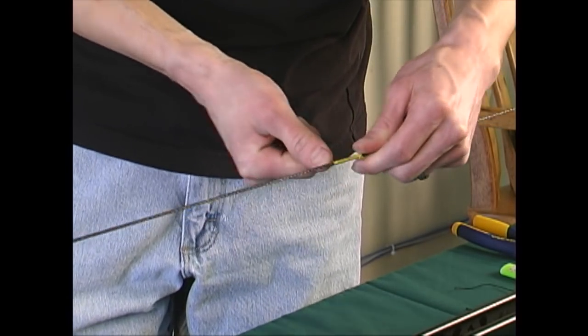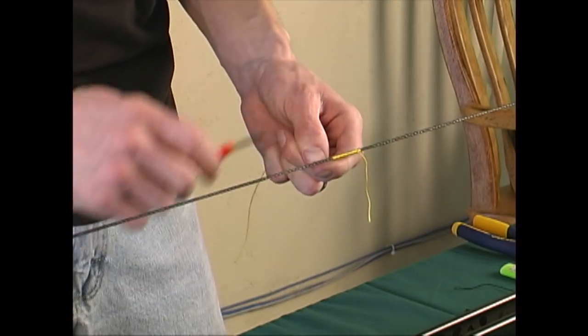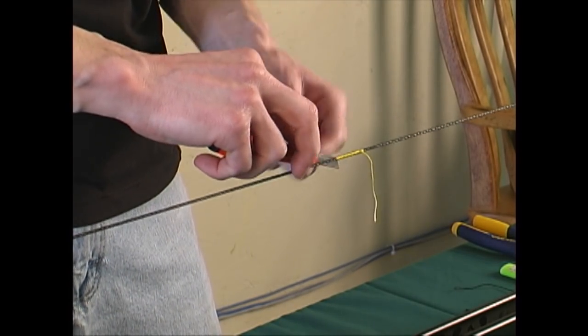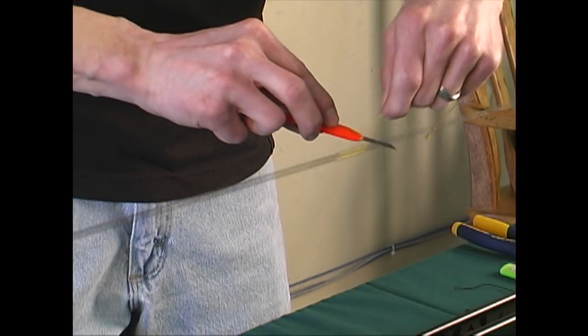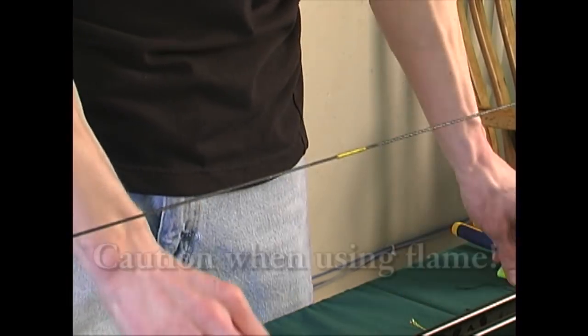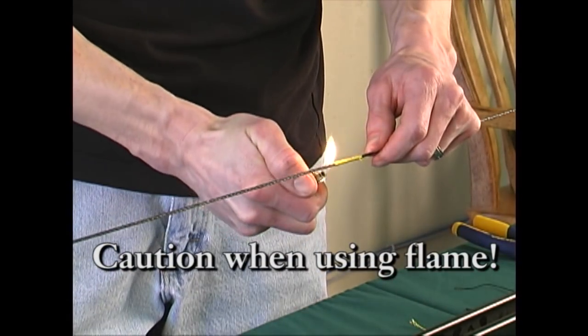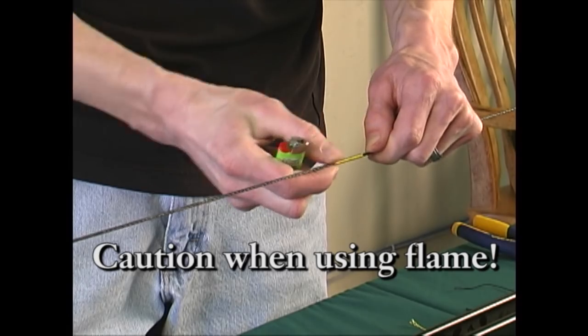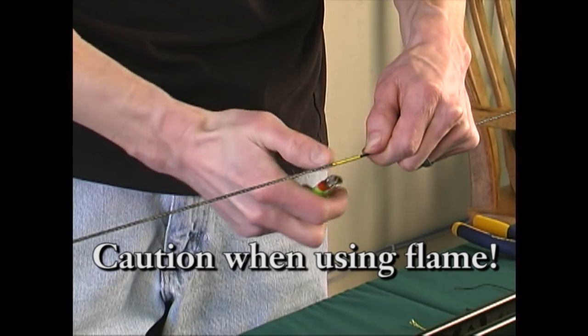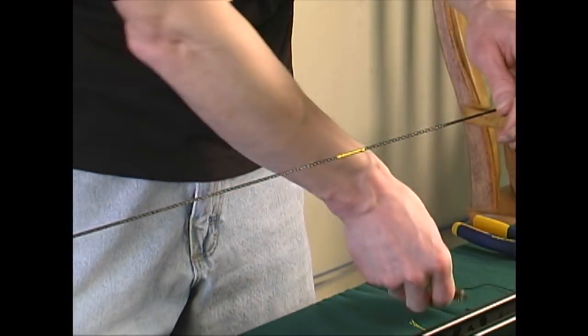Make sure it's good and tight so that it does not unravel later. Use a knife to cut close to the serving any excess. Using a lighter, you can singe the ends, but be careful when using a flame next to your bowstring. You only want to slightly singe it so that you can press any frays down.